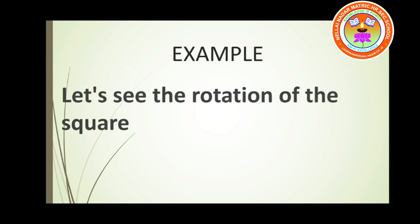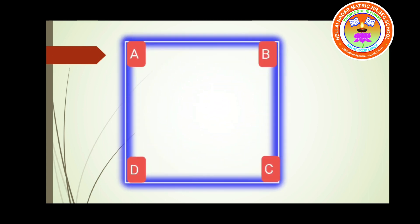Now let us see one example — the rotation of a square. Just observe, children. It is a square shape, and you can see that the edges are marked with the alphabets A, B, C, and D. These are the alphabets marked at the corners.